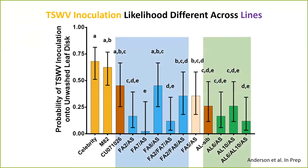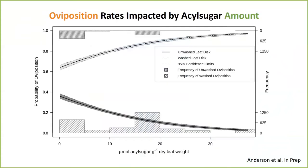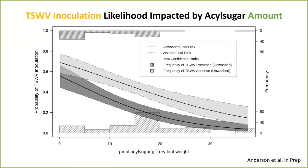Among the high acyl sugar producing lines, there's still quite a bit of variation in insect response. Is that variation due to acyl sugar level or due to changes in acyl sugar chemotype? These lines have QTL that modify chemotype, but there are also pleiotropic interactions between those QTL and the acyl sugar level, which allows us to do a logistic regression for the probability of oviposition against the average acyl sugar level of a line. As the acyl sugar level increases, the probability that a thrip lays its egg in the unwashed leaf goes down significantly, almost to zero. The opposite is true for the washed leaf disc. We see a very similar trend for TSWV inoculation, where the probability of infection in the unwashed leaf disc drops from about 60% to about 1–2%.